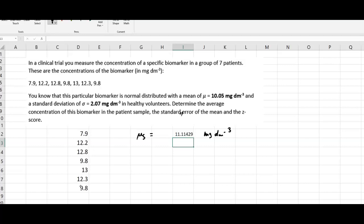So that is our sample mean. Now for the standard error of the mean, the standard error of the mean is defined as the standard deviation - and in this case we've been given a standard deviation of the population - divided by the square root of the sample size. So here, the standard deviation is 2.07 milligrams per decimeter to the minus three, and n, that was our sample size, is seven.